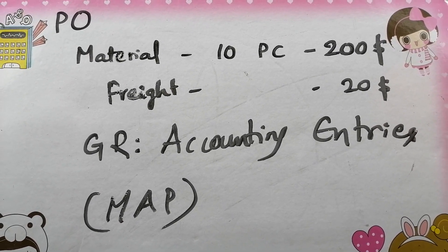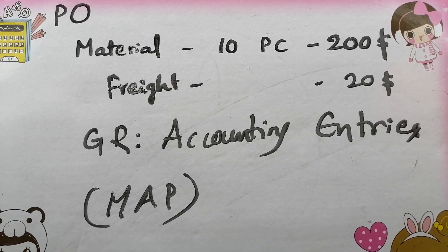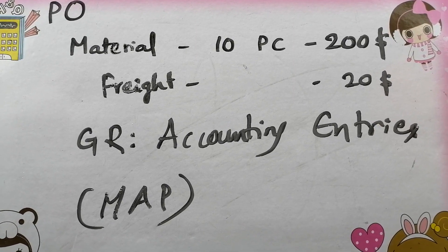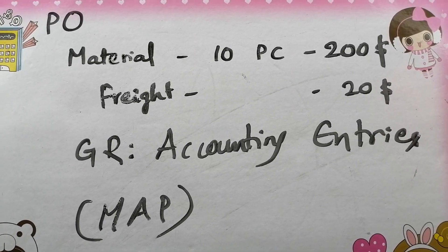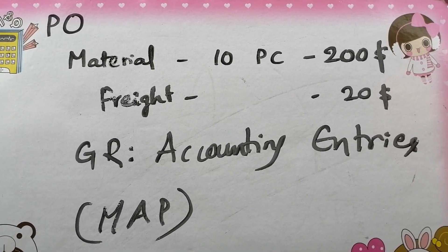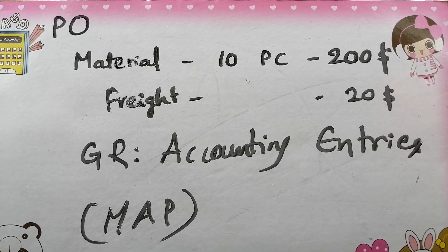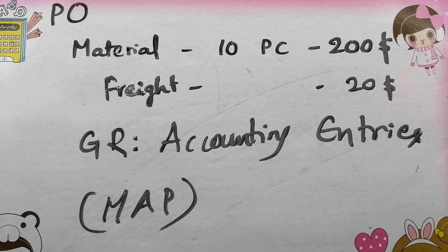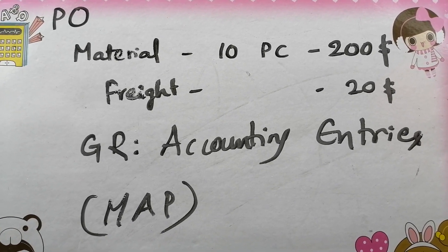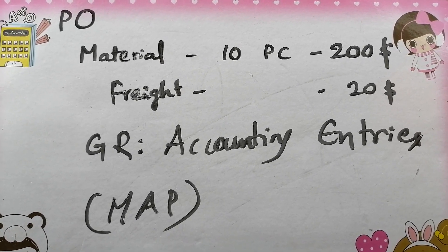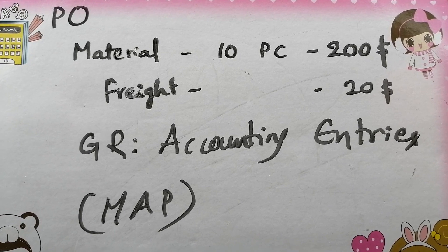If you receive the 10 quantity, what will be the GR accounting entries? Just provide the goods received accounting entries with transaction key as a comment. One point I wanted to highlight: the material is managed with Moving Average Price.